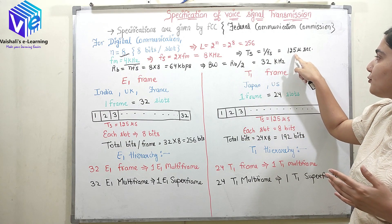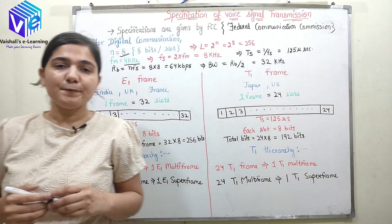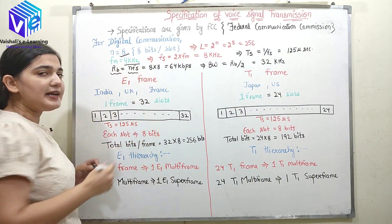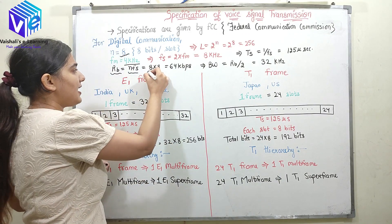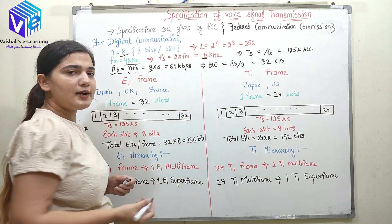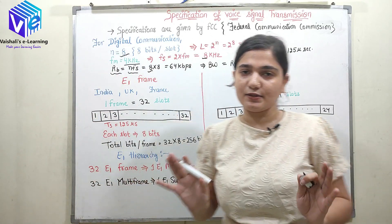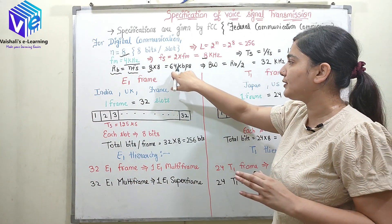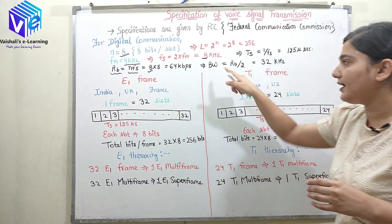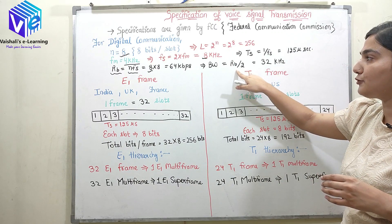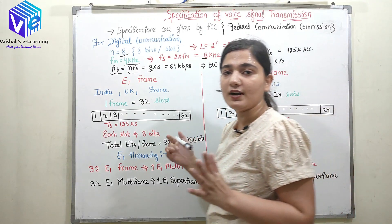The bit rate is equal to n multiplied by the sampling frequency. With n = 8 and sampling frequency = 8 kHz, the bit rate is 64 kbps. For pulse code modulation, the bandwidth is greater than or equal to Rb/2, which gives 32 kHz.